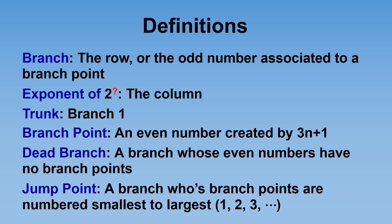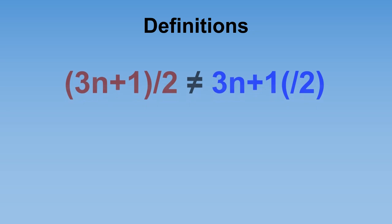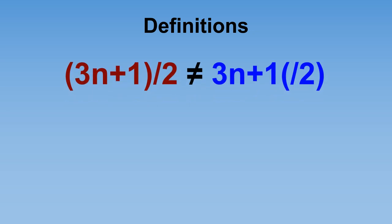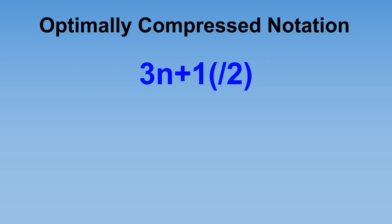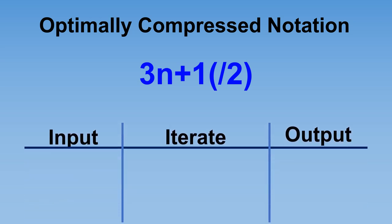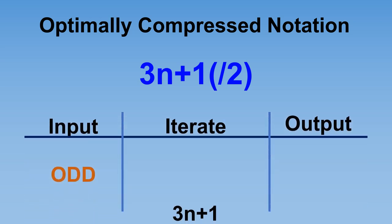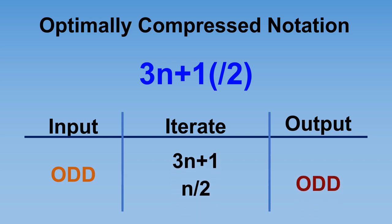The second part of the definition of a branch is the odd number processed through the 3n+1 function. Please note that the resulting even number is the branch point. These two functions are not the same. 3n+1 divided by 2 is the compressed notation normally used for stop times. The other is the optimally compressed notation. The critical difference is you continue to divide by 2 until you reach an odd number, making it a quick way to get from one odd number to the next. Please note that the odd number inputted will never be the same as the outputted odd number.